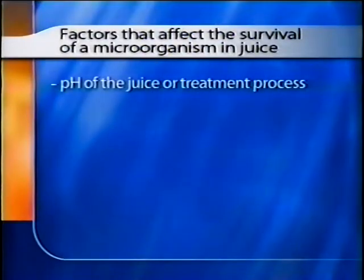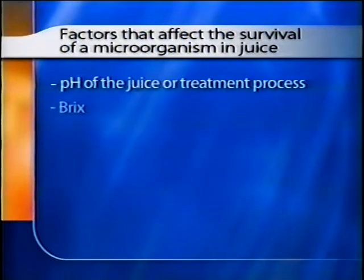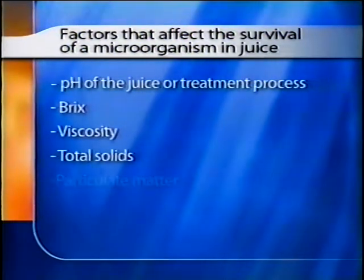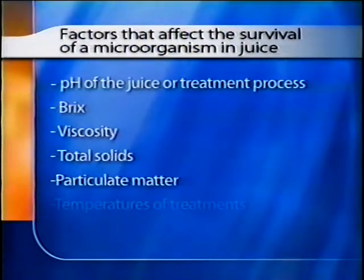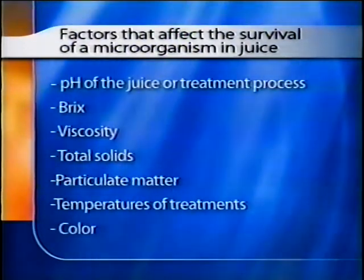Training requirements are spelled out in CFR 120.13. Once you have determined the pertinent pathogen for your product, you must validate the process you use for the five log reduction. There are many factors that affect the survival of any microorganism in a juice product. Some factors likely to affect survival in any particular process include pH of the juice or pH of the treatment process, brix, viscosity, total solids, the presence of particulate material, temperatures of treatment or treatments, and even color. Consequently, validation needs to be performed with clearly defined physical and chemical parameters.